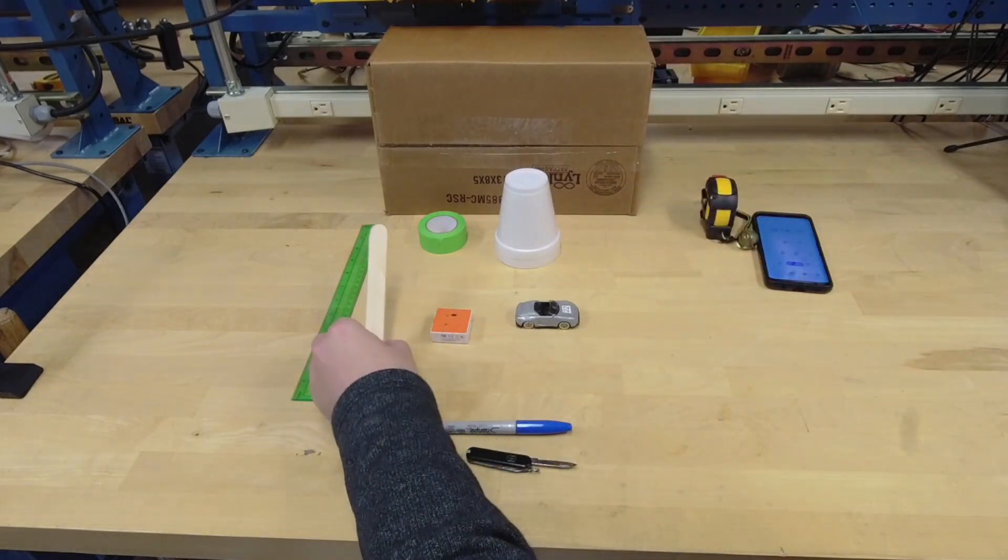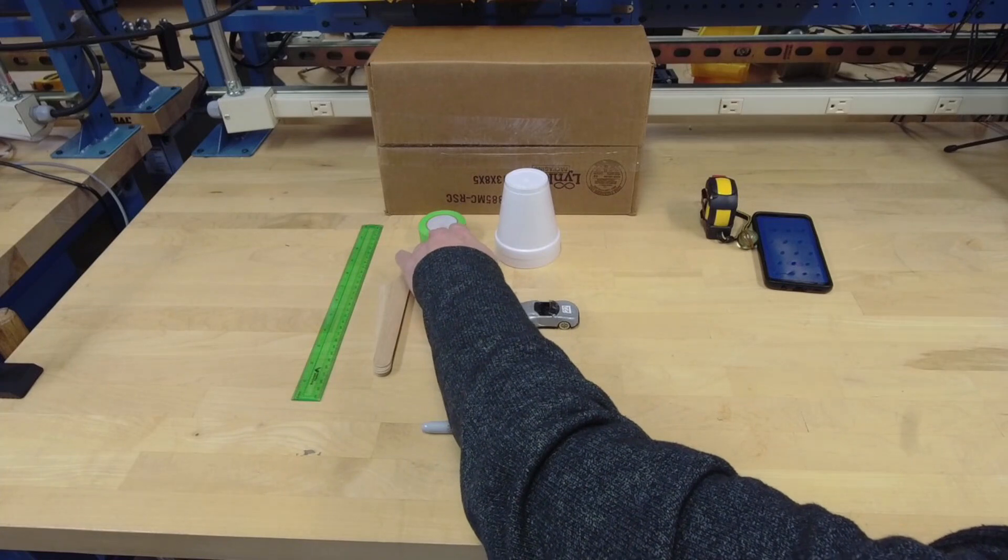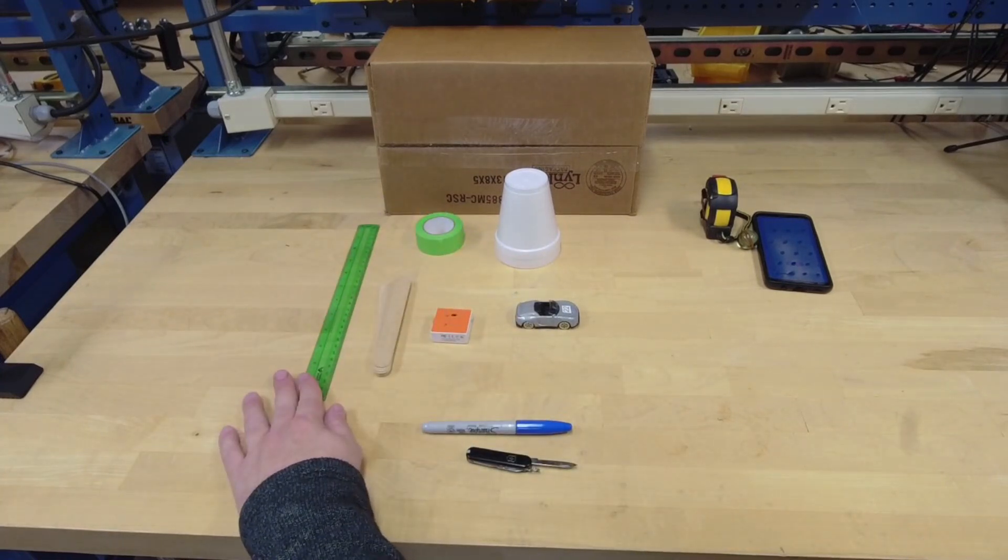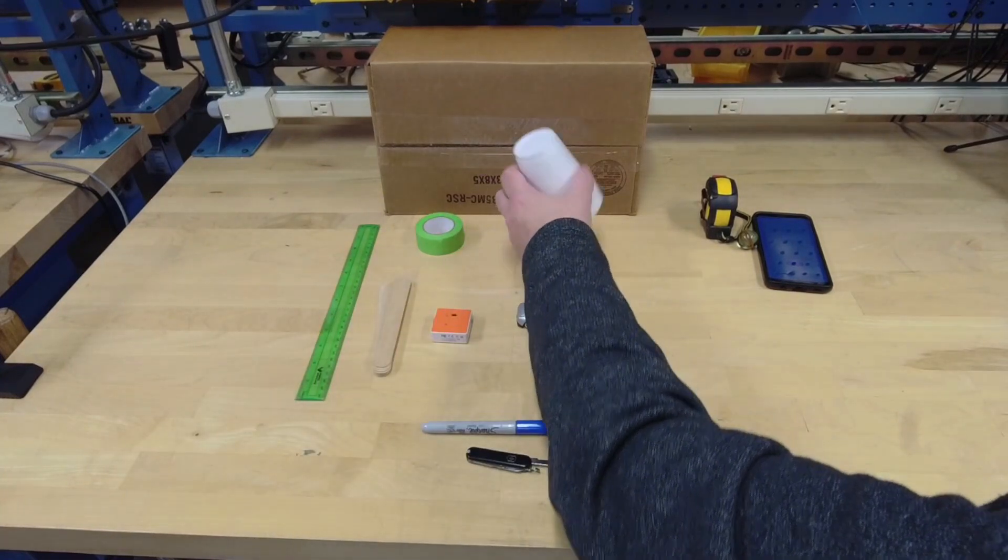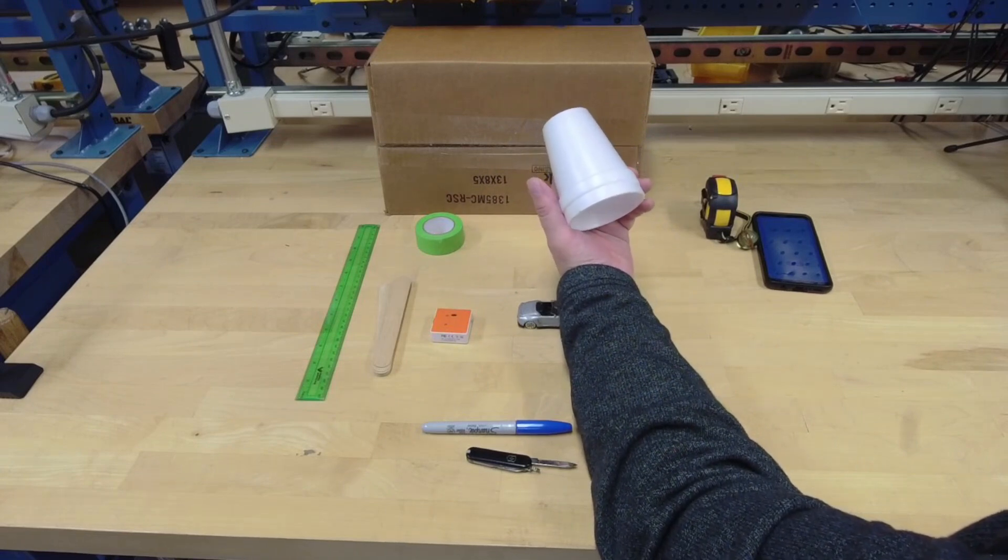We'll need the popsicle sticks, masking tape, a ruler, and the styrofoam cups from your kit. I would keep the cups stacked together.